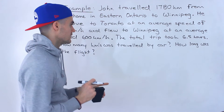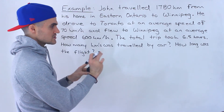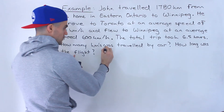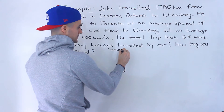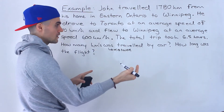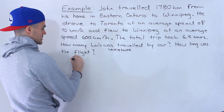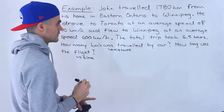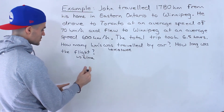Notice there are two questions within this problem, and both questions are asking for something different. The first question is asking for a distance — the distance that was traveled by the car. The second question is asking for time: how long was the flight?